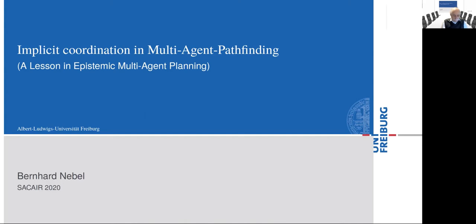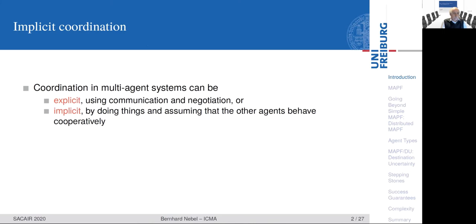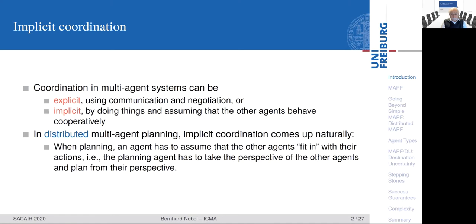Let me start with an explanation of what I mean by implicit coordination. When you have a multi-agent system, you have to coordinate between the agents, and that can be done in an explicit way using communication and negotiation. Or one can also try to do it in an implicit way, just by doing things and assuming that the other agents behave in a cooperative way, and so everybody converges on satisfying the common goals. In a distributed multi-agent planning system, this kind of implicit coordination comes up in a very natural way. When planning, an agent has to assume that the other agents will fit in with the actions, and then the planning agent has to take the perspective of the other agents and plan also from their perspective, hoping that they will act according to this plan or in a very similar way.